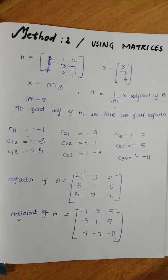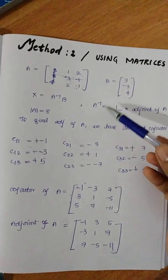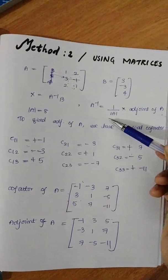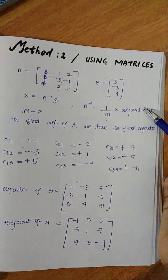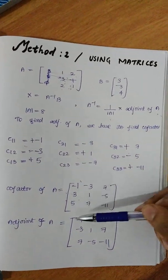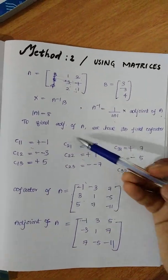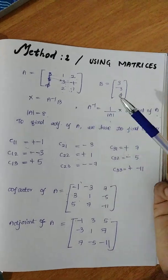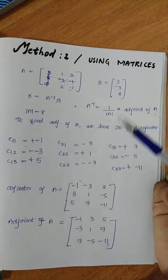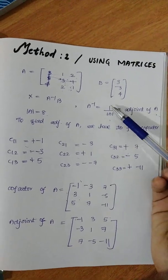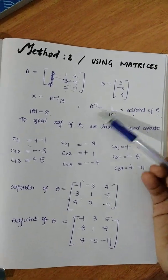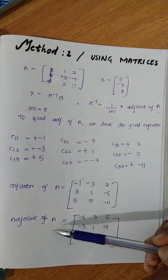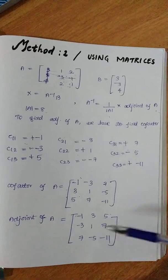Adjoint of A. Adjoint of A is given by 1 by determinant of A, into adjoint of A. Adjoint of A has been found. 1 by determinant of A, 1 by 8 into adjoint of A — that's what we do.